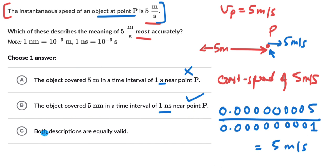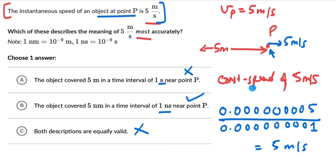Option C says both descriptions are equally valid. Both descriptions would have been equally valid if the object was moving with a constant speed of 5 meters per second throughout. But if the speed is changing, we need to look at the distance covered in a small time interval around point P. This one is also wrong. Alright, let's move on to the next one now.